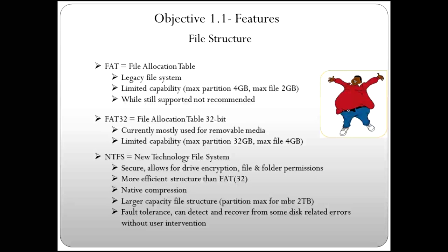Now let's move on to file structures. There are three main file structures: FAT, FAT32, and NTFS. When we talk about FAT, we're actually talking about FAT16, a 16-bit file system. It is a legacy system — FAT16 had a limited capacity with a max partition of 4 gigabytes and a max file size of 2 gigabytes. FAT16 is still supported but not recommended. You'll find it on USB drives or removable media like cameras.